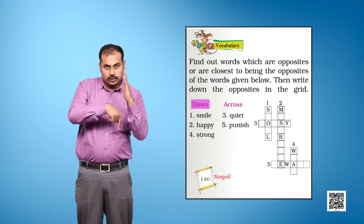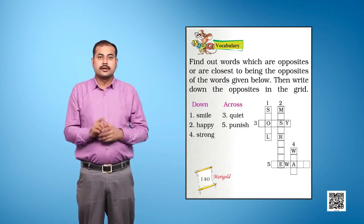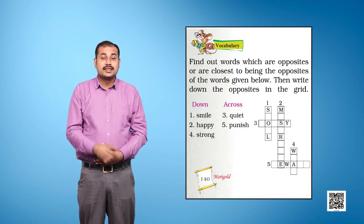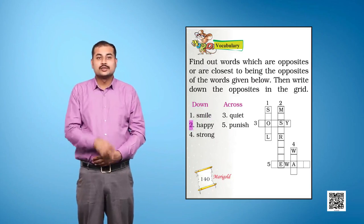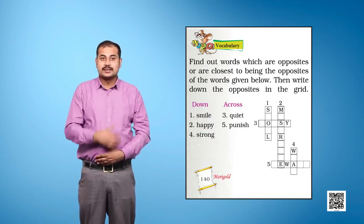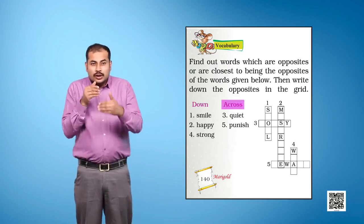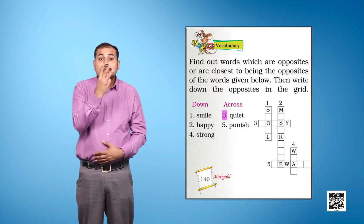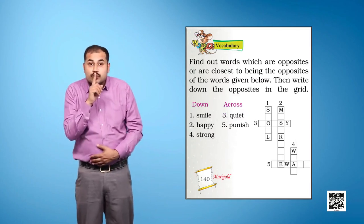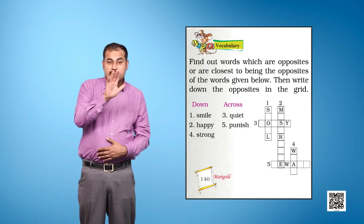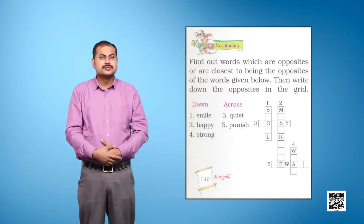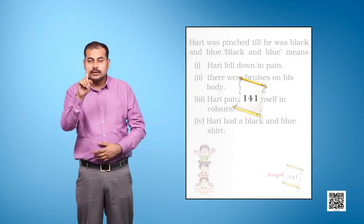Down: One Smile, Two Happy, Four Strong. Across: Three Quiet, Five Punish. Page One Hundred Forty One.